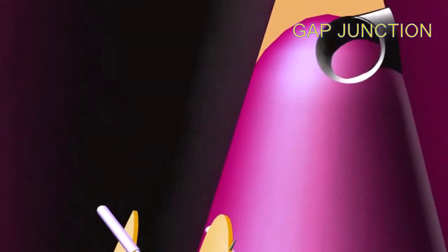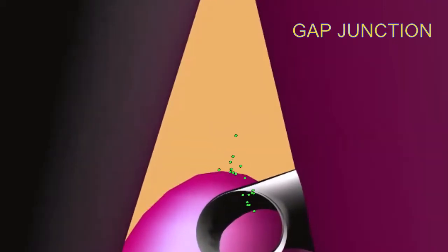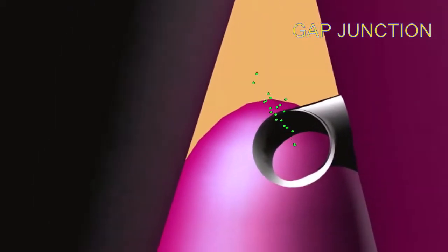Because gap junctions allow ions to pass directly between cells, there is no synaptic delay, and thus the muscle fibers of a chamber can contract as a unit.